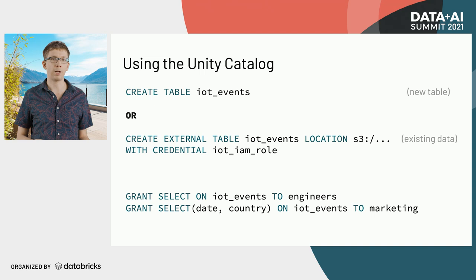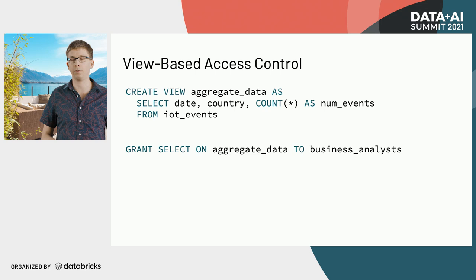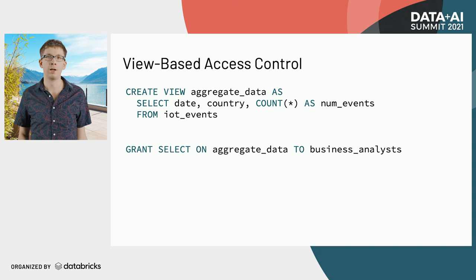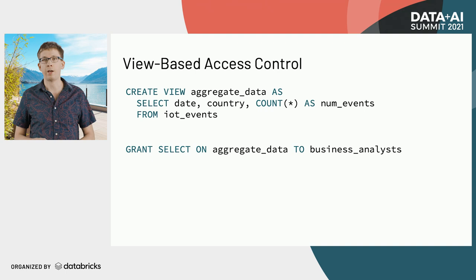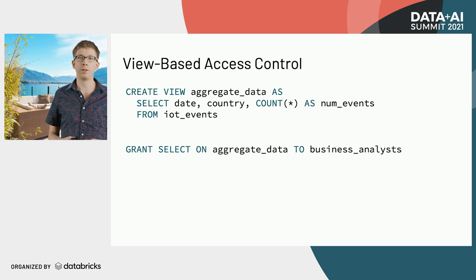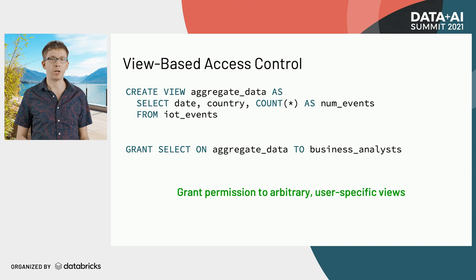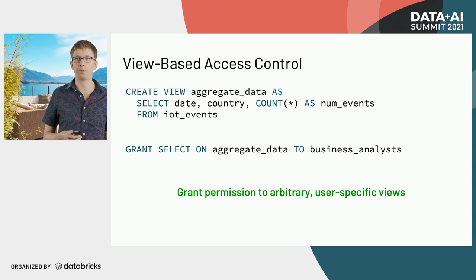The permissions aren't just limited to tables and columns. The Unity Catalog also understands SQL views, which allows you to create views that aggregate data in complex ways and give someone access to just a specific subset. For example, if we had IoT events and for some users we only wanted them to see aggregate data by date and country instead of individual events, we can just create a view that aggregates that and grant select on that view. The Unity Catalog will make sure these users can only see the aggregated data. You can have arbitrary logic in there, and you can also check the user's identity when deciding what data to show to them.